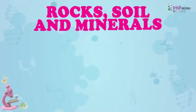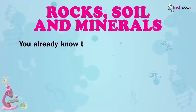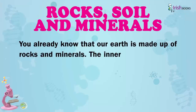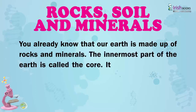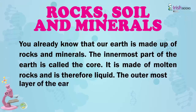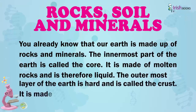Chapter 12: Rocks, Soil, and Minerals. You already know that our earth is made up of rocks and minerals. The innermost part of the earth is called the core. It is made of molten rocks and is therefore liquid. The outermost layer of the earth is hard and is called the crust. It is made of solid rocks.